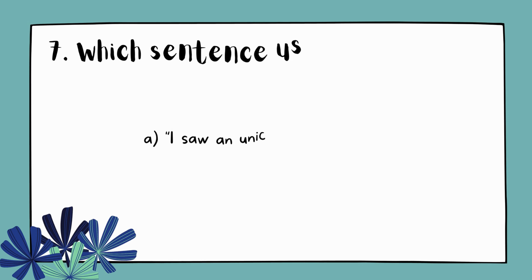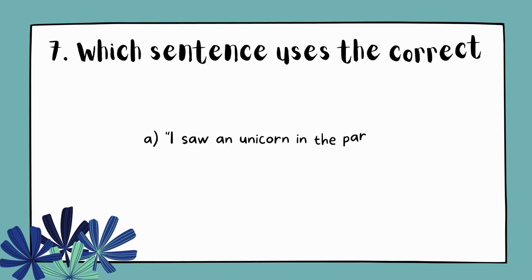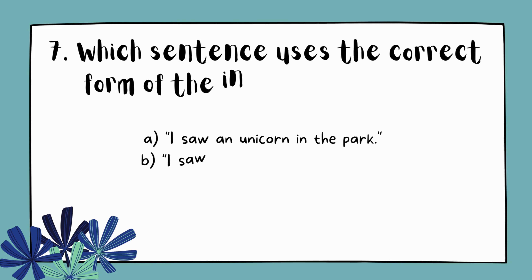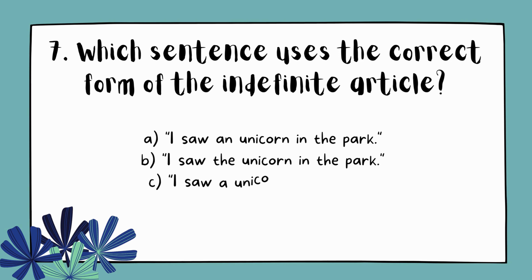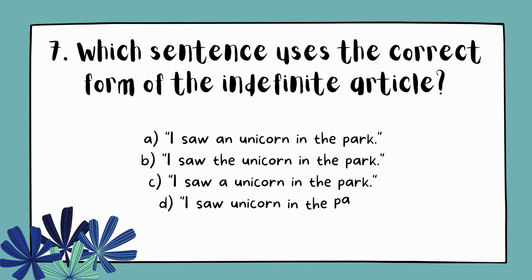Question 7. Which sentence uses the correct form of the indefinite article? A. I saw an unicorn in the park. B. I saw the unicorn in the park. C. I saw a unicorn in the park. D. I saw a unicorn in the park.